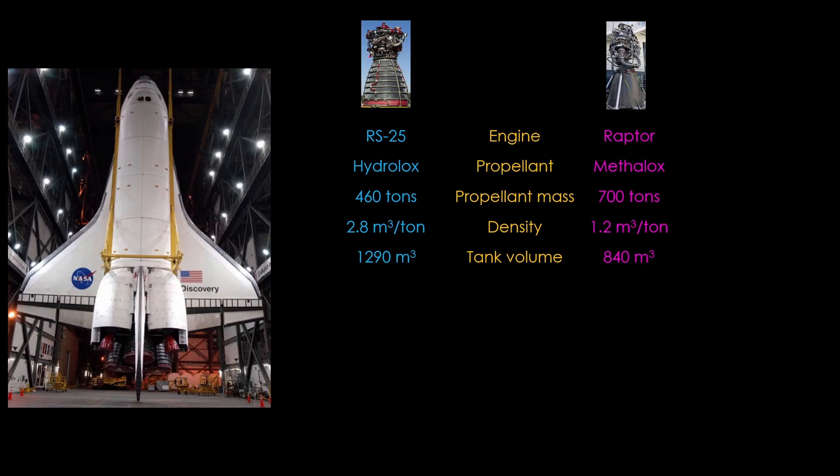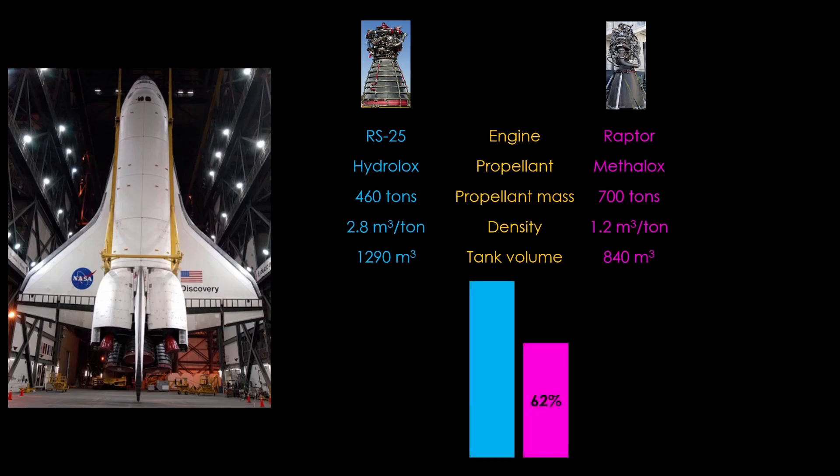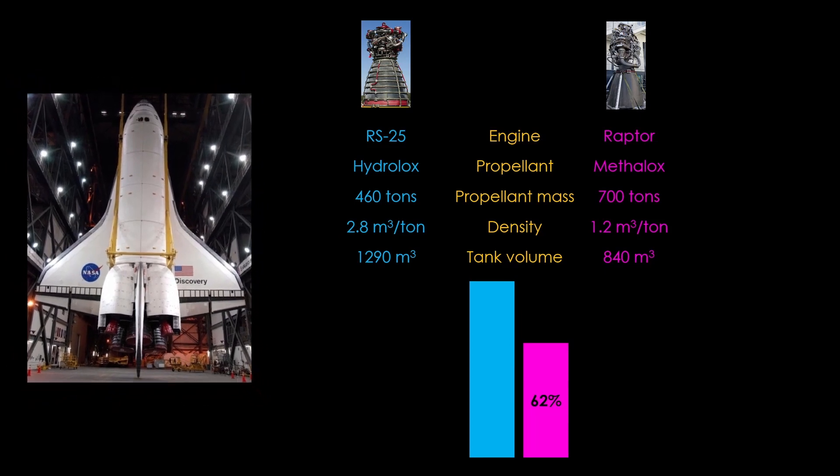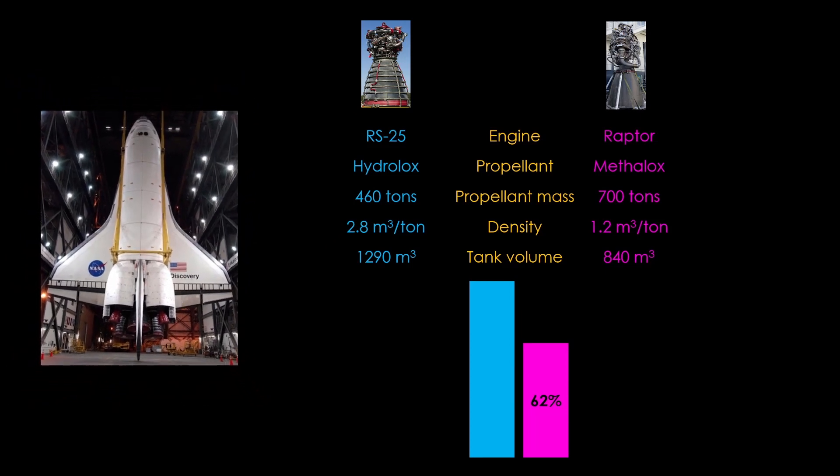The result is that the required tank volume for Raptor is 38 percent less than the RS-25 version. That means a significantly smaller orbiter, or carrying more propellant for a larger payload.